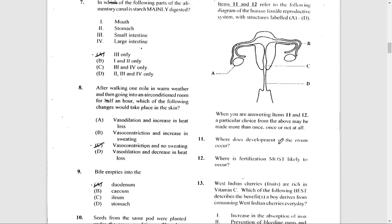Number 11: Where does the development of the ovum occur? The ovum is a female gamete, and that is in the ovary. So that would be A, the ovary.